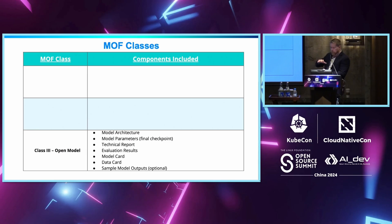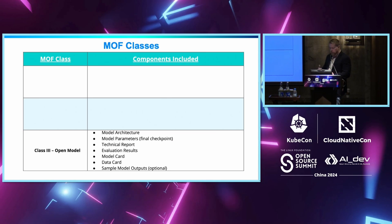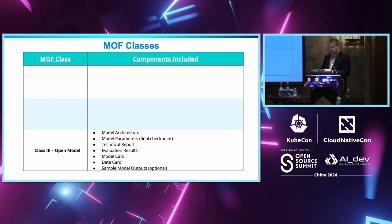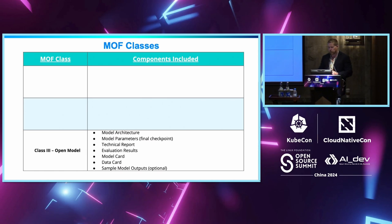We took all of these components and decided how to chunk them into a classification system for different uses and clear ranking of models as they're released. We have the concept of an entry-level model, which is a Class 3 open model. This includes the model architecture, final checkpoint parameters, an accompanying technical report, some evaluation results, a model card, and a data card. This is the minimum viable product you need to use a model in your business, for research, or to fine-tune it for domain-specific use.